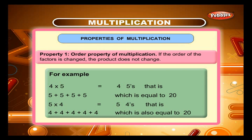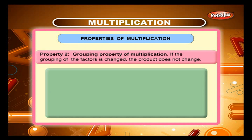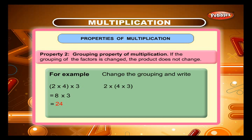Property 2: Grouping property of multiplication. If the grouping of the factors is changed, the product does not change. For example, 2 into 4 into 3 is equal to 8 into 3, which is equal to 24. Change the grouping and write 2 into (4 into 3) is equal to 2 into 12, which is equal to 24. Therefore, 2 into 4 into 3 equals 2 into 4 into 3.